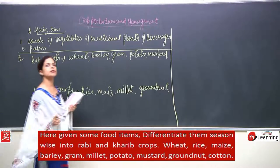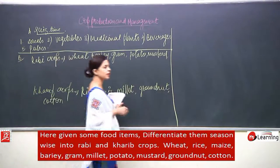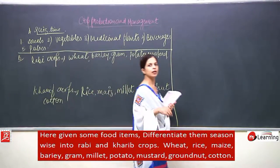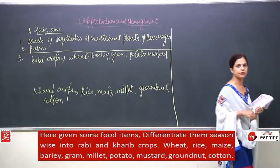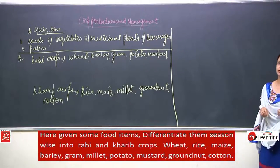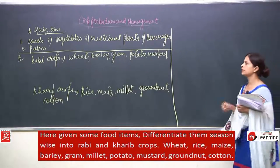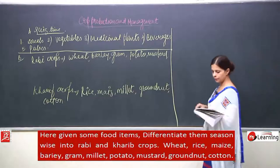So it was a mixture of Rabi and Kharif crops, and we were supposed to separate them, which we did.